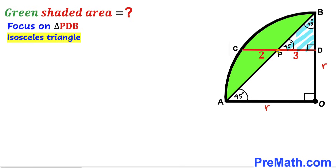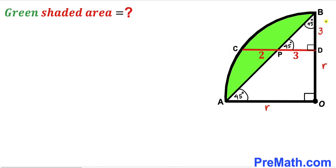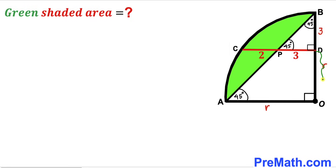In other words, side PD equals side BD. Since segment PD is 3 units, segment BD is 3 units as well. Now, the whole length OB is radius r, and segment BD is 3, so the remaining segment OD is going to be r minus 3.